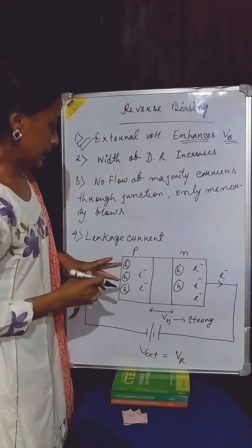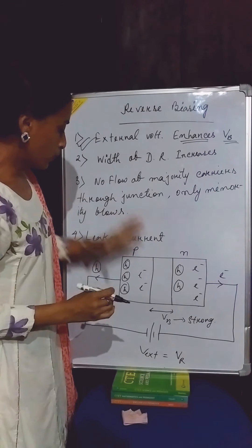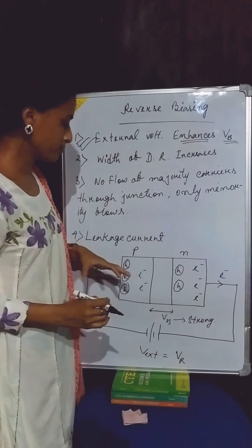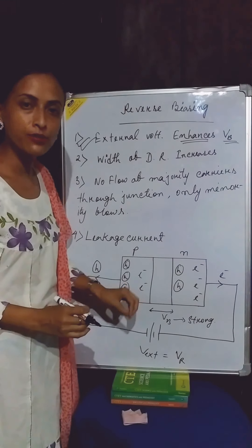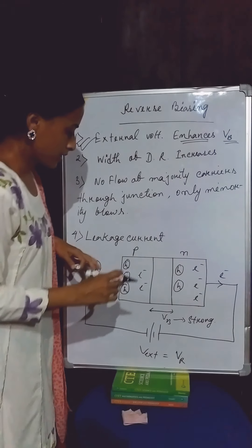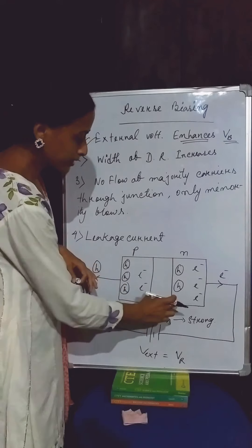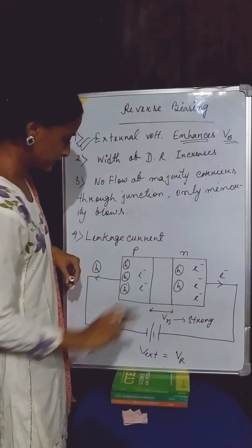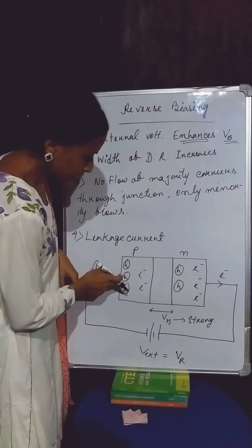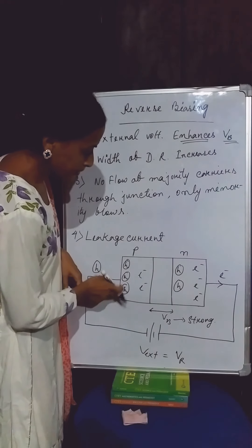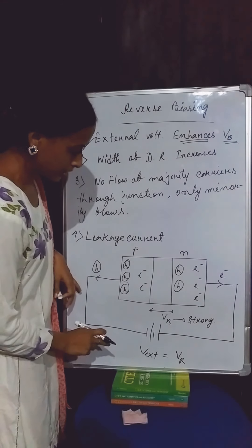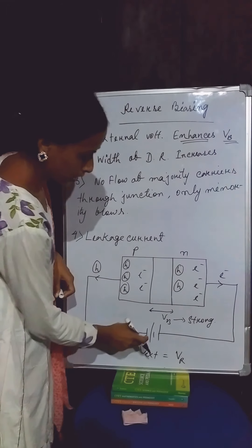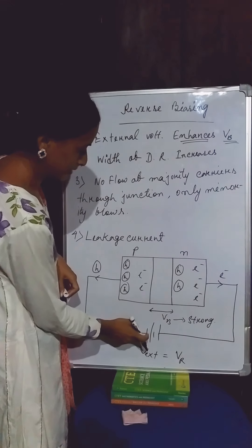Now we have to discuss about the working principle or mechanism of a diode under this reverse biasing connection. So when a diode is kept under this connection, then first what happens? The majority carriers — that means the holes in the P-section — are pulled away from this junction by the negative terminal of the external battery.